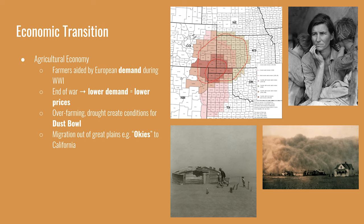Another problem compounding farmers' woes was over-farming and drought in the Great Plains, which created conditions for the Dust Bowl. Decades of dry farming techniques exhausted nutrients from the soil, and combined with a lack of rain, turned soil into sand swept up through the plains. As windstorms picked up dust and sand, it blew to other parts of the Great Plains and diminished soil quality there. This became a push factor driving people from the Great Plains to other areas of the country, mainly California.